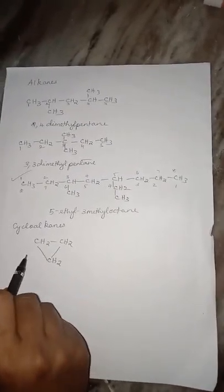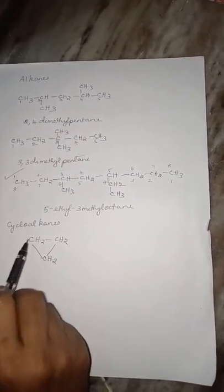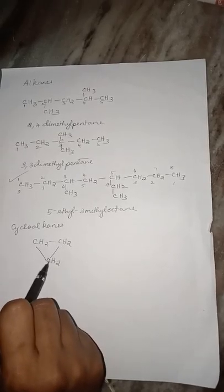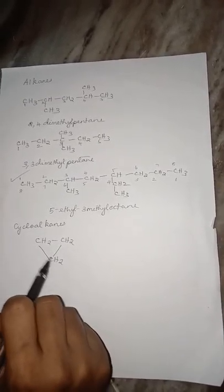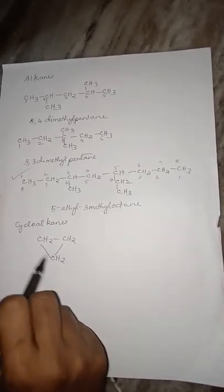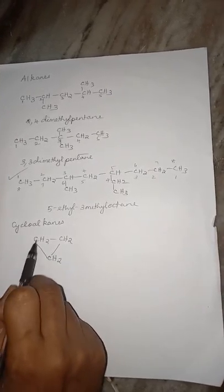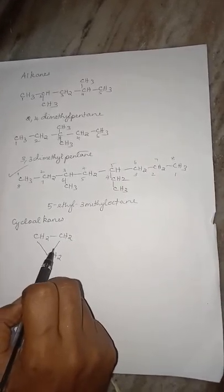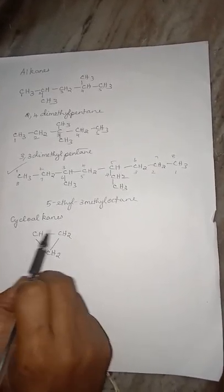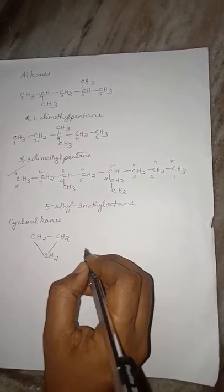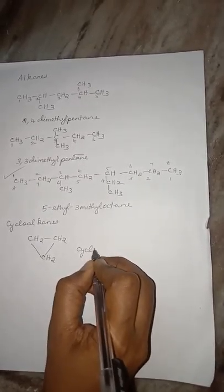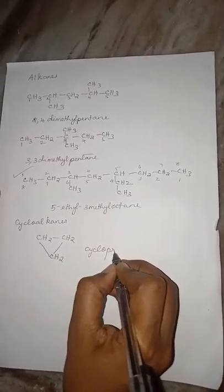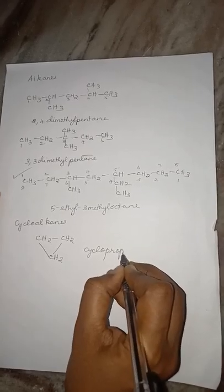For example, we are trying to name this structure. This is an alkane where the carbons are held in a cycle, so it is an example of a cycloalkane. It contains 3 carbons, so you add the word 'cyclo' — it is cyclopropane.